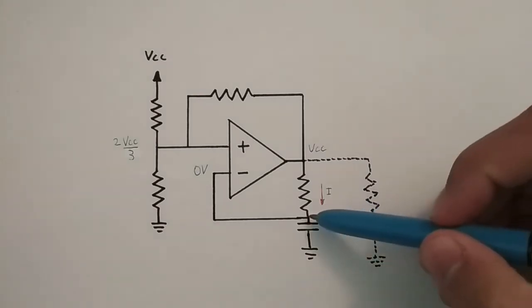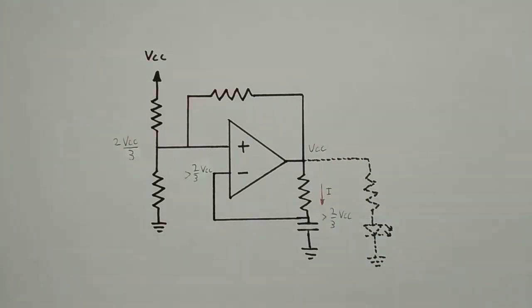Once the capacitor voltage exceeds ⅔ Vcc, the output goes low.